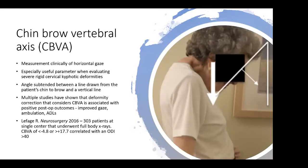A newer measurement, and largely clinical, is the chin-brow vertebral axis. This is a measurement of horizontal gaze. It's especially useful when evaluating severe rigid cervical kyphotic deformities and gives an objective measure of the patient's ability to maintain horizontal gaze. It's the angle between a line drawn from the patient's chin to their brow and a line vertical to gravity. Multiple studies have shown that deformity correction that considers this angle is associated with better postoperative outcomes in terms of improved gaze, ambulation, and ADLs.